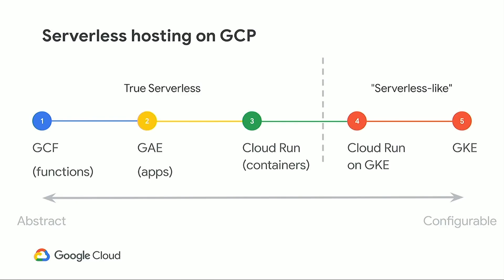A quick overview of serverless hosting on GCP. On the left we have Google Cloud Functions, which take tiny snippets of code and scale them to whatever demand may be. To the right of that, we have App Engine, which takes applications — sets of URL routes that map to functions. Then we have Cloud Run, our newest serverless product, which lets you run containers in a serverless and scalable manner. Those three are our true serverless options. To the right, we have serverless-like options such as Cloud Run on GKE and raw GKE, which require some degree of management.